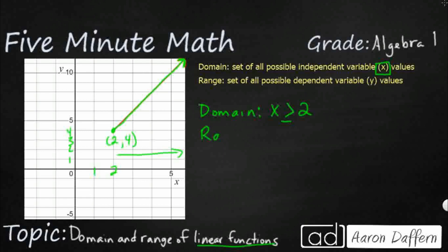We're going to do the same thing for our range. The range is the set of all possible dependent variable values — basically the y's. It's going to be greater than or equal to because it is a closed circle, starting at 4 and going up, never stopping. So our domain is anything greater than or equal to 2, and our range is anything greater than or equal to 4.